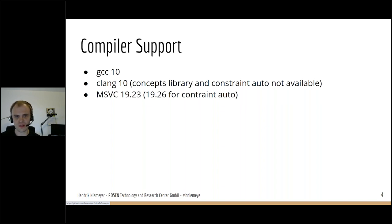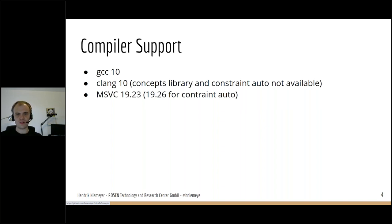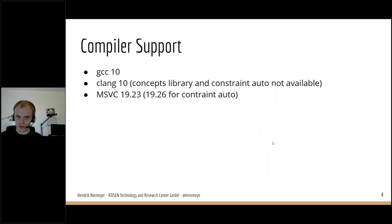Clang also supports concepts, but in Clang 10, the concepts from the standard library are missing and what is called constraint auto is not available. For Microsoft Visual Studio Compiler, since version 19.23 you can use concepts, and since version 19.26 you can also use constraint auto. There have been some problems with the Visual Studio IDE where concepts syntax is highlighted as an error, although the compiler knows how to deal with it — I don't know if this has been fixed with the last update.